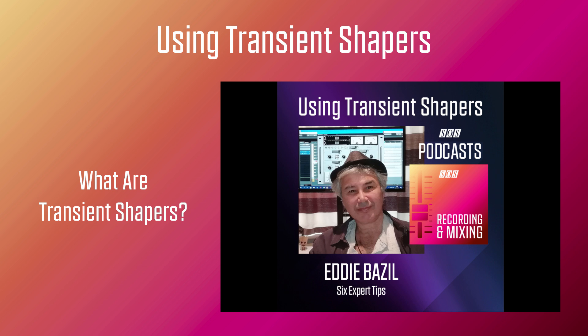Alternatively, transient shapers can work magic on sounds that are transient rich but lack a well-controlled and specified body. I have on many occasions resolved imbalances between transients and the body of a specific sound by working on redefining the sustain and release elements. Guitar lines, piano hits, and anything that's either plucked or hit can often display this type of transient/non-transient imbalance, and this is where transient shapers excel as corrective tools.